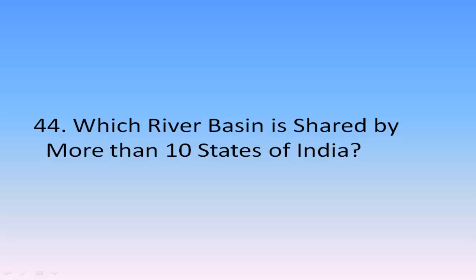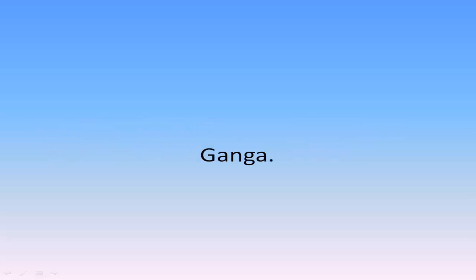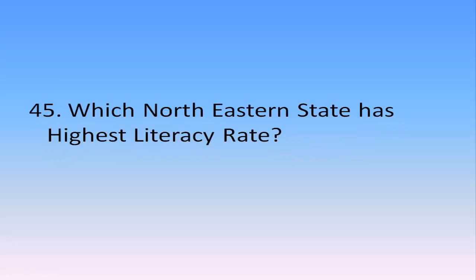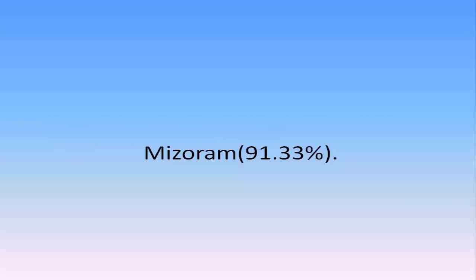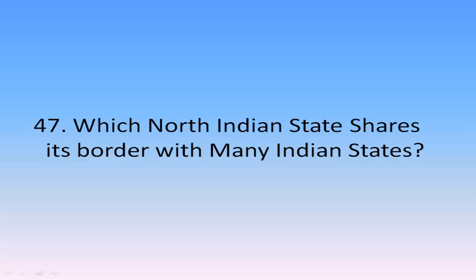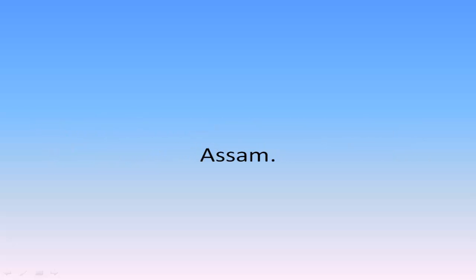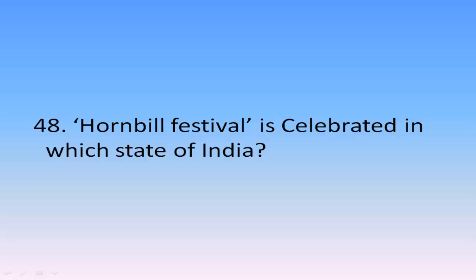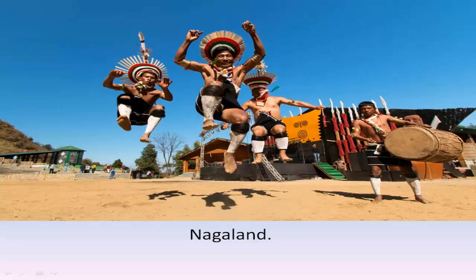Maharashtra has the highest GSDP. Which river basin is shared by more than 10 states of India? The Ganga. Which northeastern state has the highest literacy rate? Mizoram, with 91.33% literacy. Which council officially recognizes the northeastern region? The Northeastern Council. Which northeastern state shares its border with the most states? Assam. Hornbill festival is celebrated in which state of India? Nagaland.